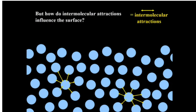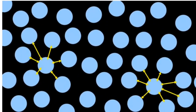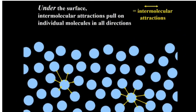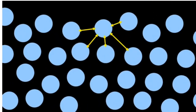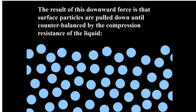We need to find out how intermolecular attractions influence the surface. Under the surface, attractions of individual molecules pull on each other in all directions. At the surface, the pull on the molecules is lateral and downward, with negligible attraction above, so the net force on surface molecules is downward.